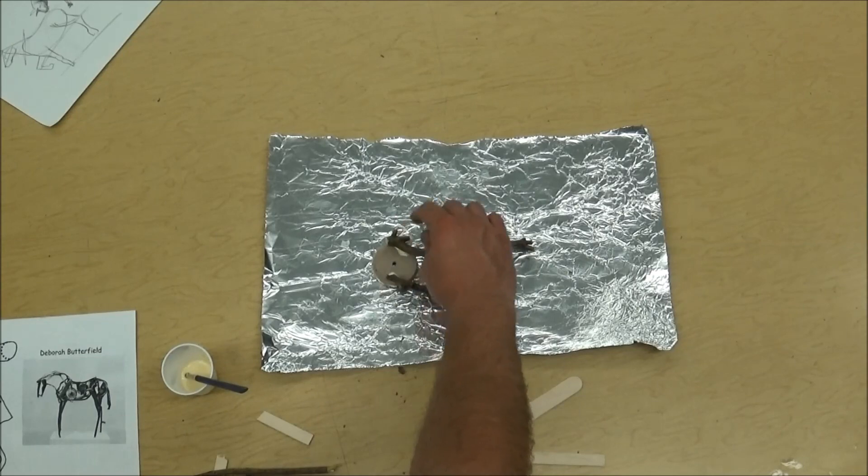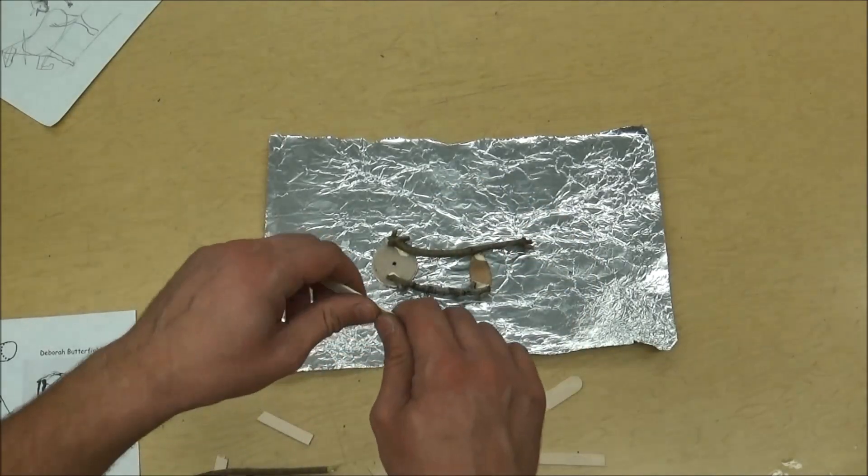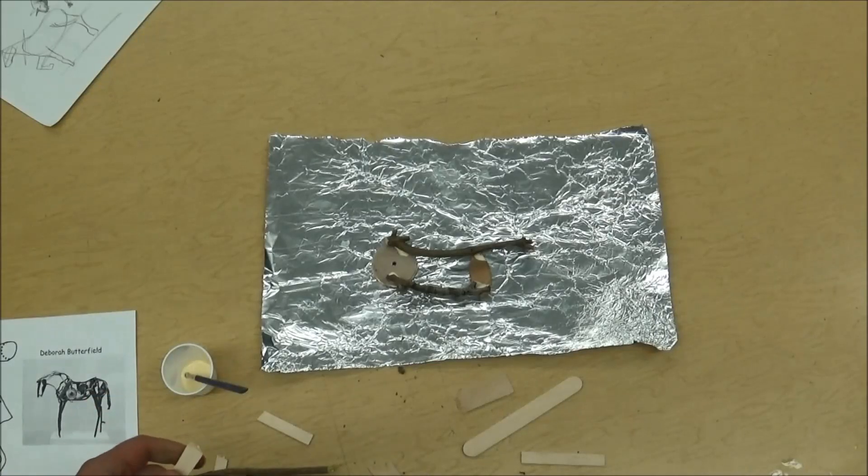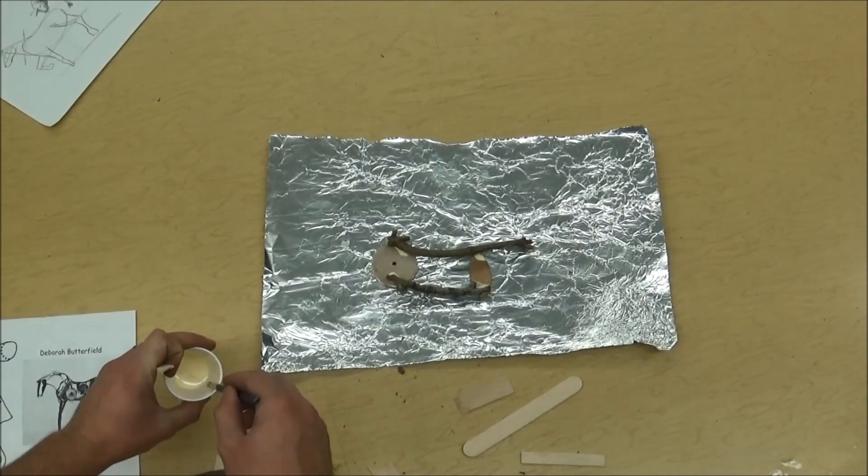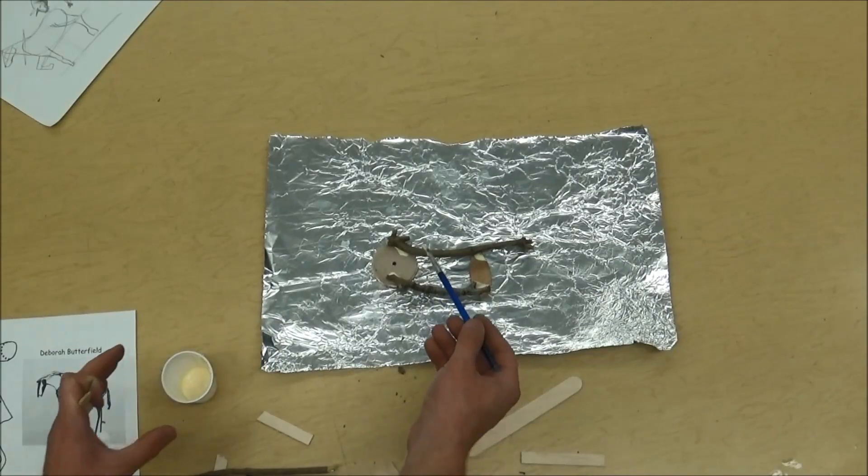So there's basically the body. And then I can fill it in with supports. And Deborah Butterfield does this too. So you could take shorter pieces of wood and kind of cross them over. And that'll make it look more interesting and it'll also make it stronger.